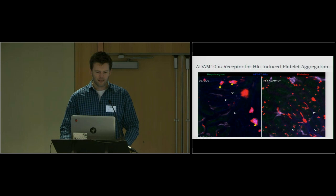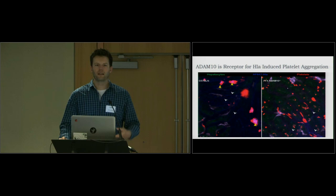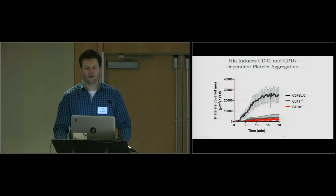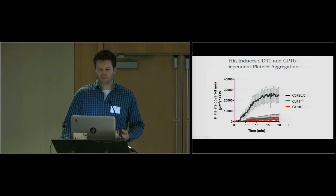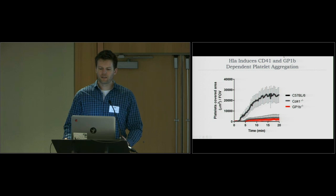Zooming in, you can appreciate that in the core of these aggregates there is direct toxin binding. In ADAM10 PF4-Cre mice, you don't see this binding to platelets and no aggregation occurs. What happens next is that after alpha toxin intoxication, these platelets get activated and use their own cellular machinery to aggregate, because in CD41 or GP1b-alpha knockout mice you also don't see this aggregation anymore.